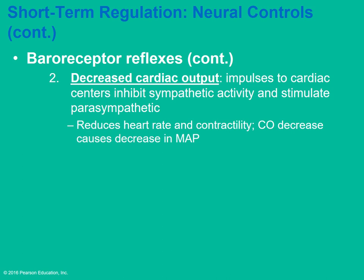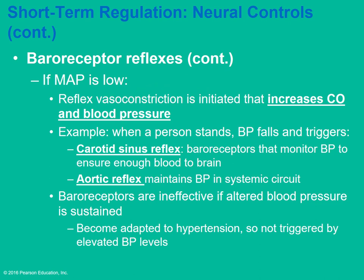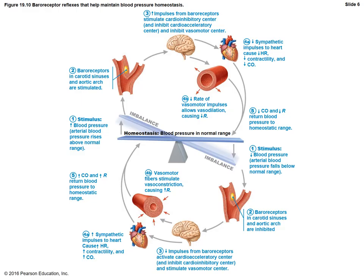To decrease blood pressure, you can increase the diameter of blood vessels. Constricting blood vessels or decreasing diameter increases blood pressure. To decrease cardiac output, you decrease the heart rate. If mean arterial pressure is low, you need to increase cardiac output and increase blood pressure. To maintain homeostasis, blood pressure must be kept in a normal range, and these receptors detect changes and make appropriate adjustments.